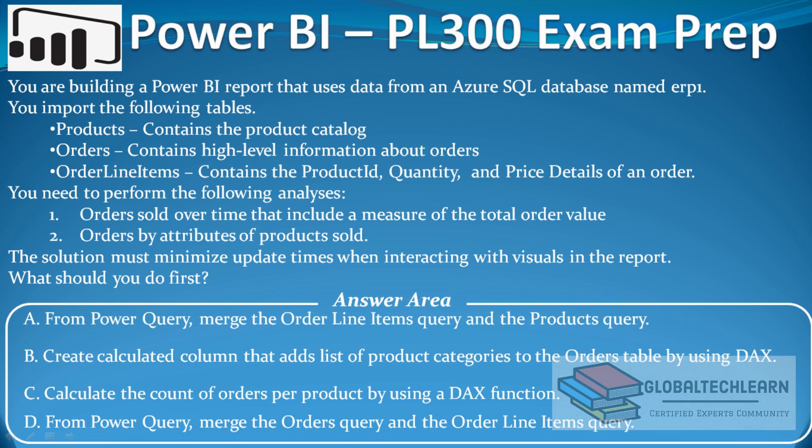However, creating a relationship is not given in the options, so we need to think from a different perspective. Here, instead of minimizing the data model, the emphasis is on reducing the interaction time on visuals. When we want to reduce interaction time on visuals, we have to shape the data during transformation itself, rather than creating relationships in report view.